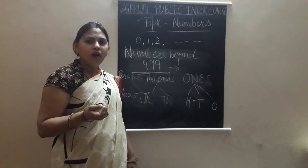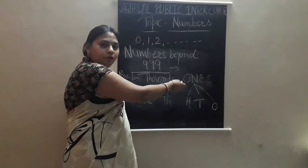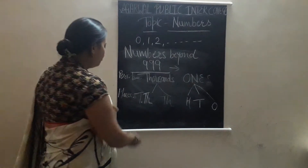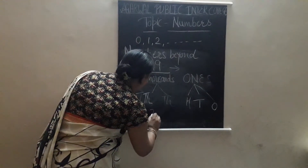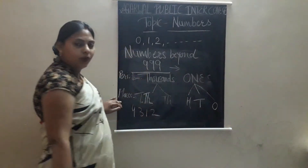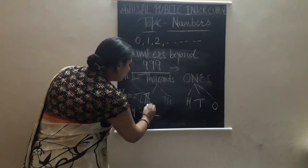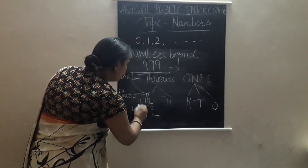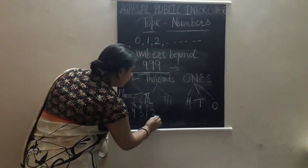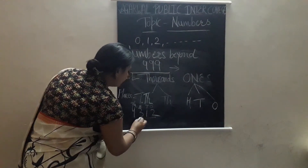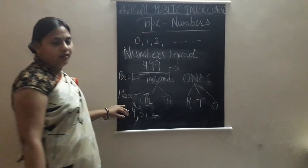We use a comma to separate the thousands period from the ones period. Suppose we write 4,312. We use a comma to separate ones, tens, hundreds from thousands. So we put the comma here.